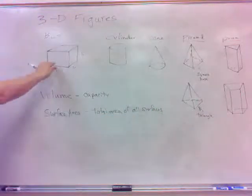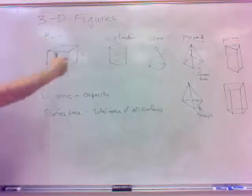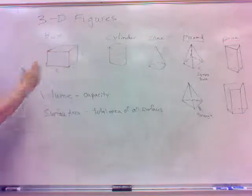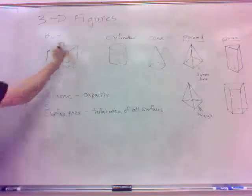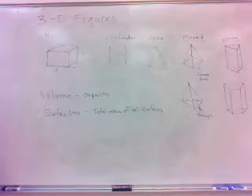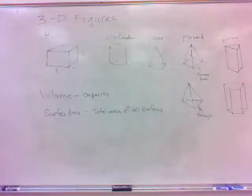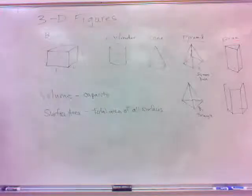For surface area on a box, we take the front and the back, find the area of those, then the two sides, then add the top and bottom. We just add the areas of all the surfaces together — that's called the surface area, for obviously good reason.